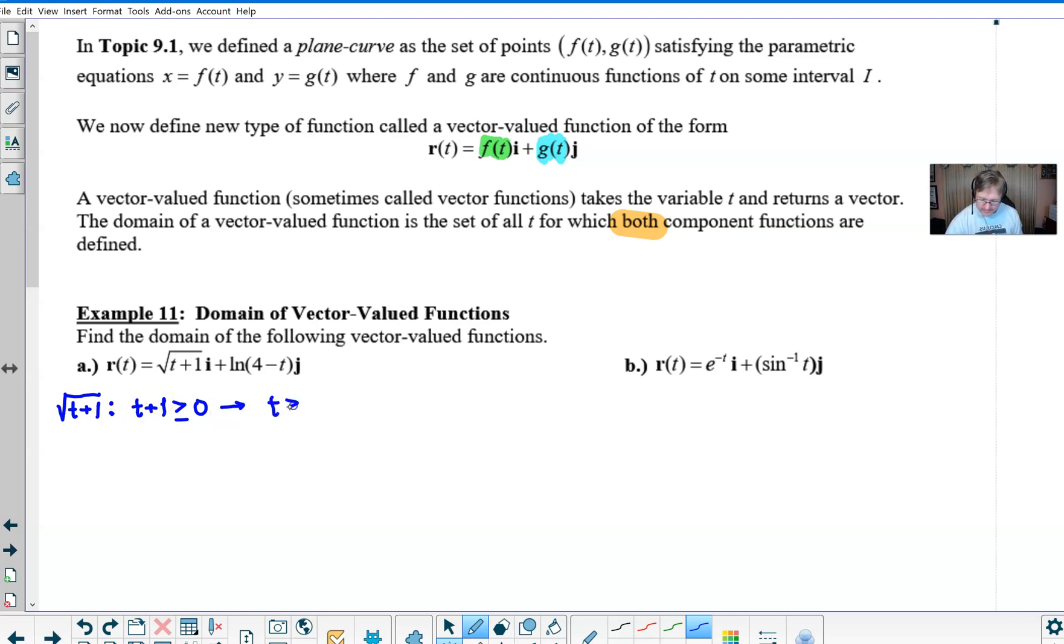If we write that as t plus one greater than or equal to zero, we ultimately can solve this and say that t has to be greater than or equal to negative one. Likewise, we're going to do the same thing with this natural log of four minus t expression. Now what I like about these problems is it really does harness some really good understanding about function behavior that could even help you perform well on older stuff in the course, way back in the AB portion of the course.